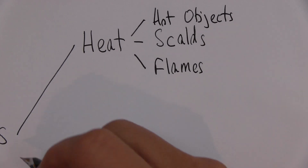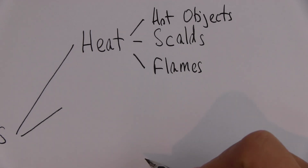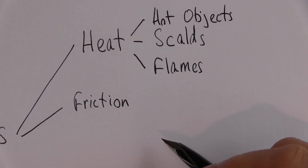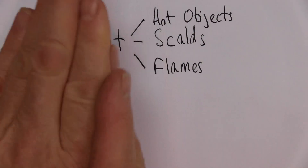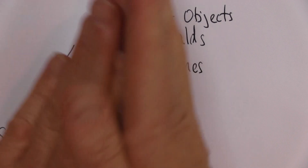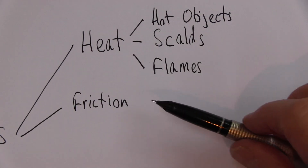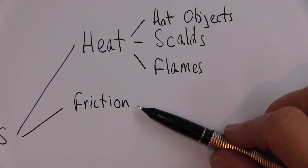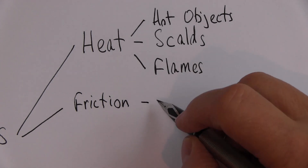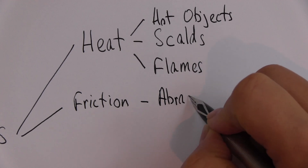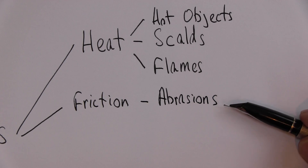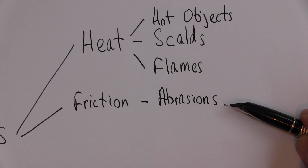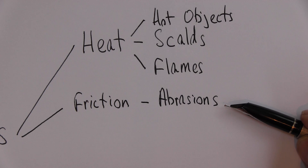So heat is one cause of burns. Another cause, maybe less obvious, is friction — friction burns. When two things are rubbing together, friction is going to generate heat, so it is quite reasonable to call these burn injuries. The friction often leads to what we call abrasions: injuries caused by wearing or scraping. They're usually superficial but not always, because the friction could cut deeper into the tissues.